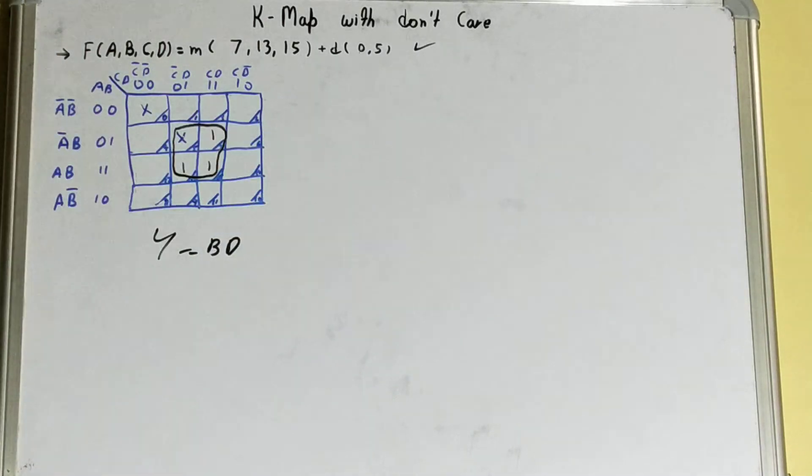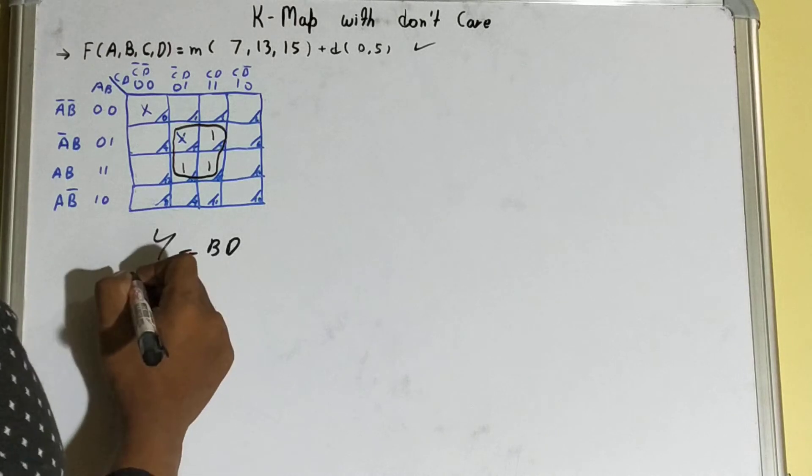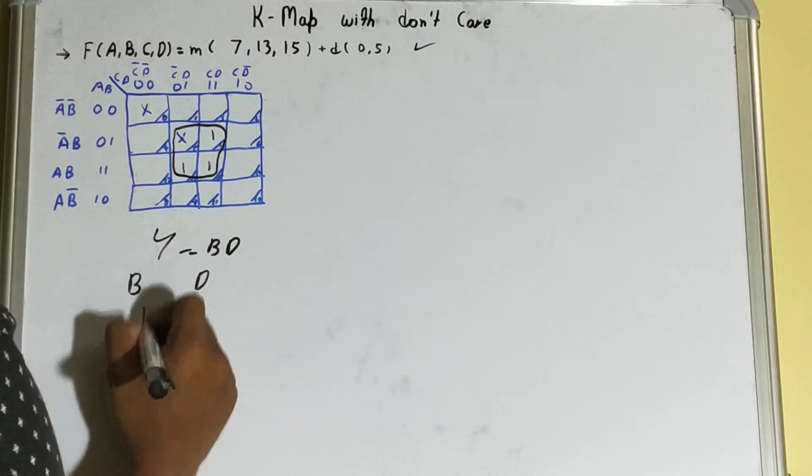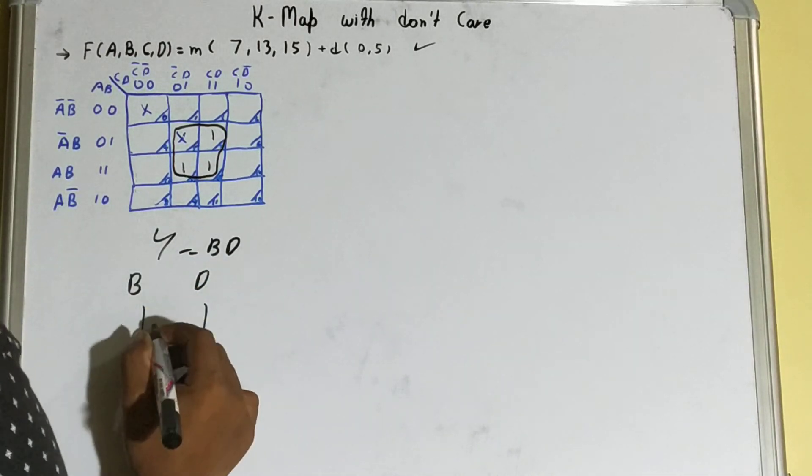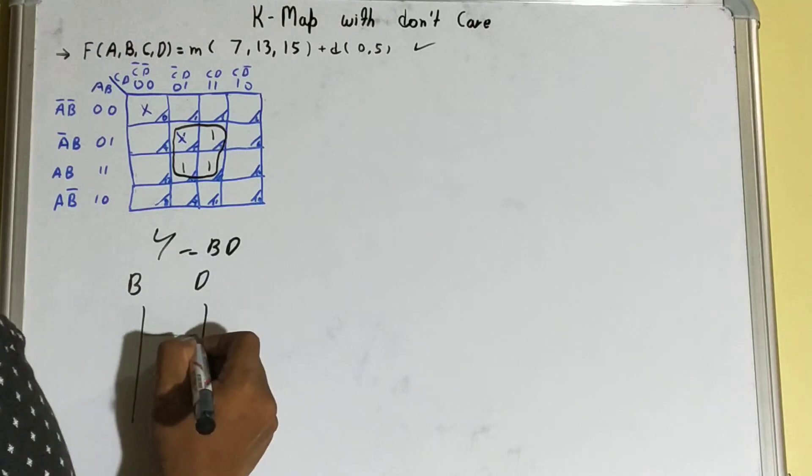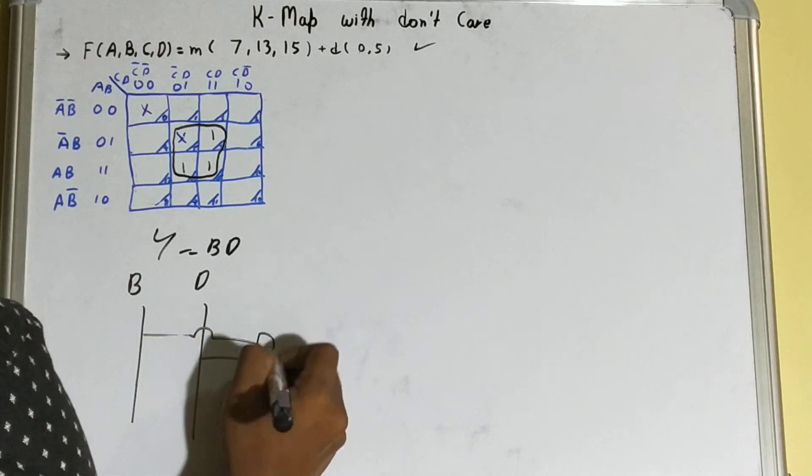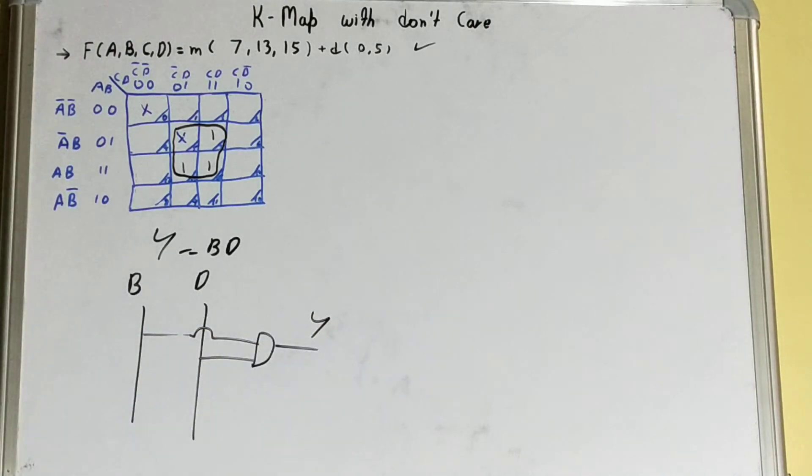So let's draw your logic circuit. We need B and we need D, and we'll pass it through AND to obtain our final expression. And we did not consider this one because this did not come in our combinations.